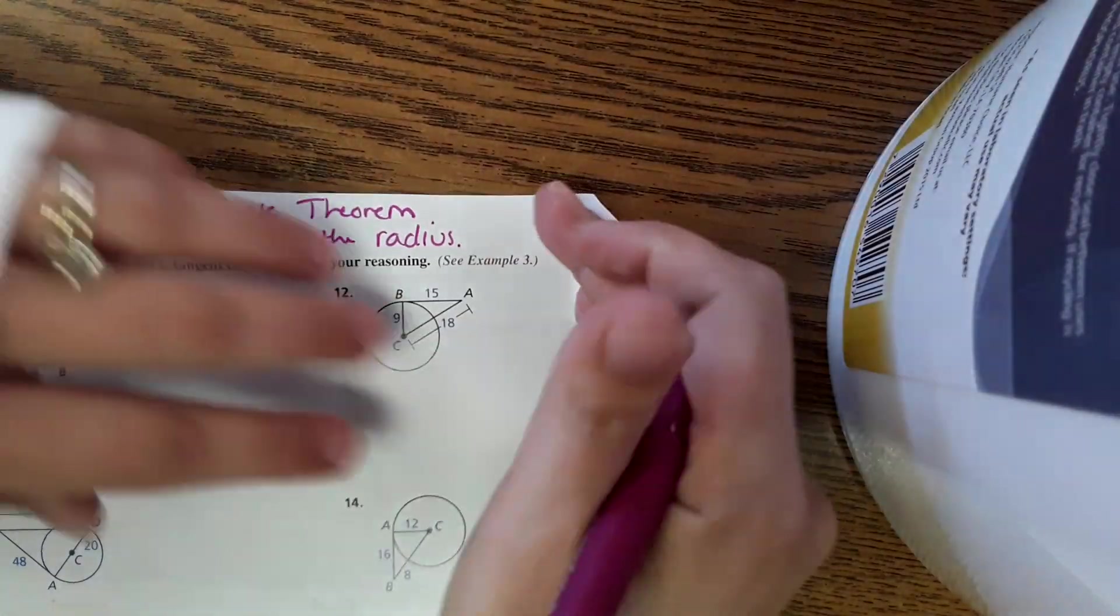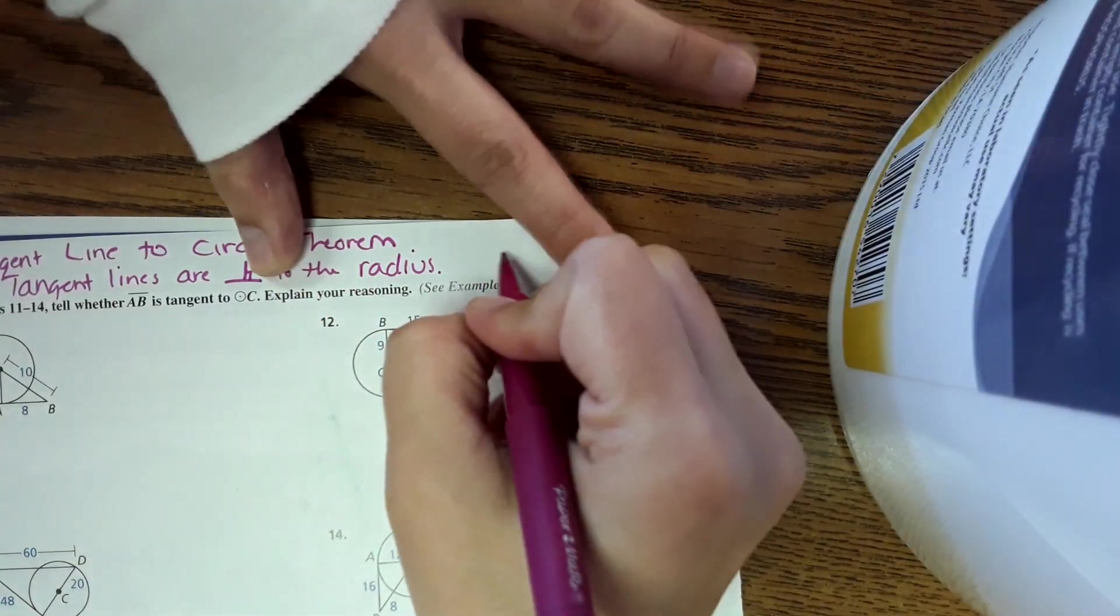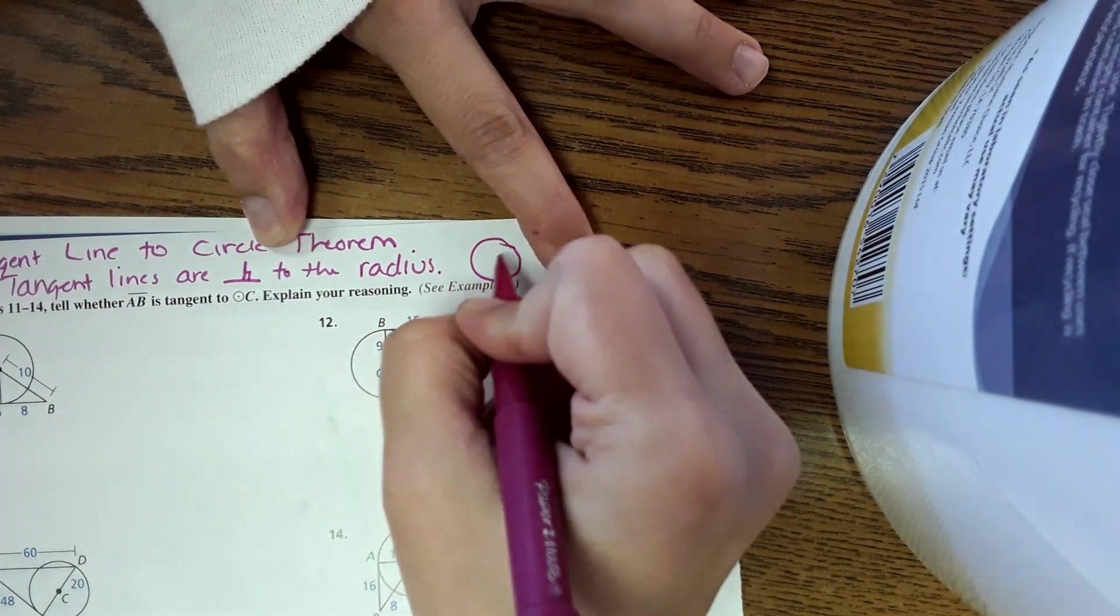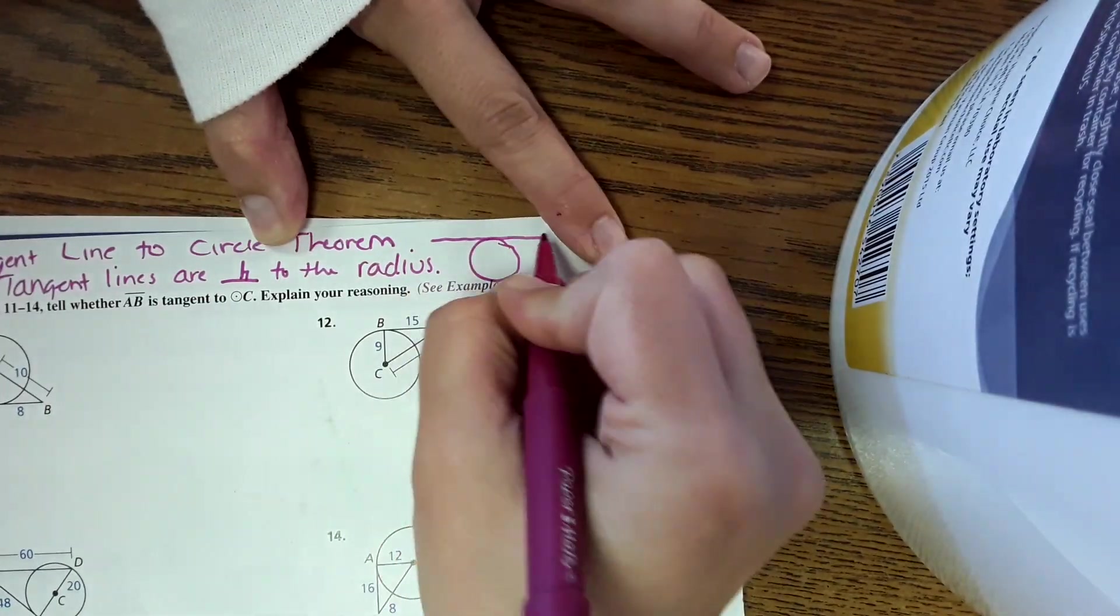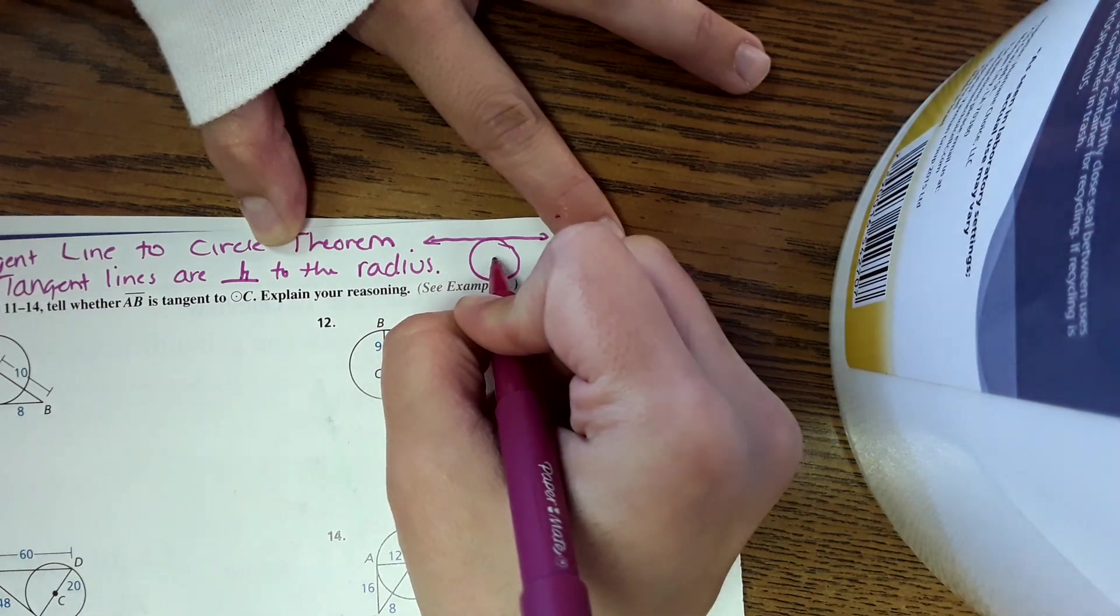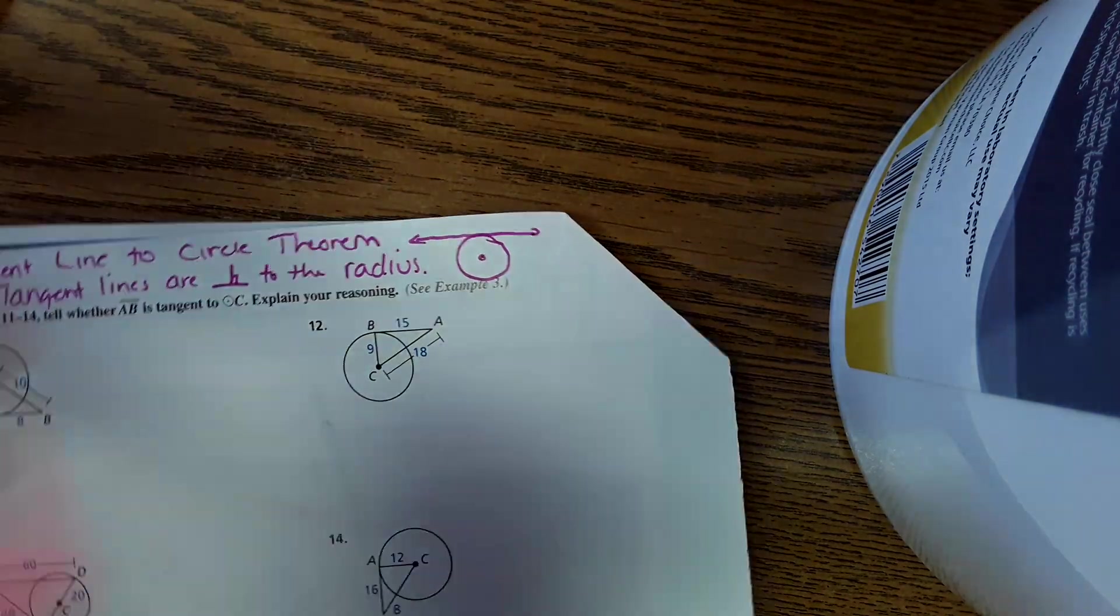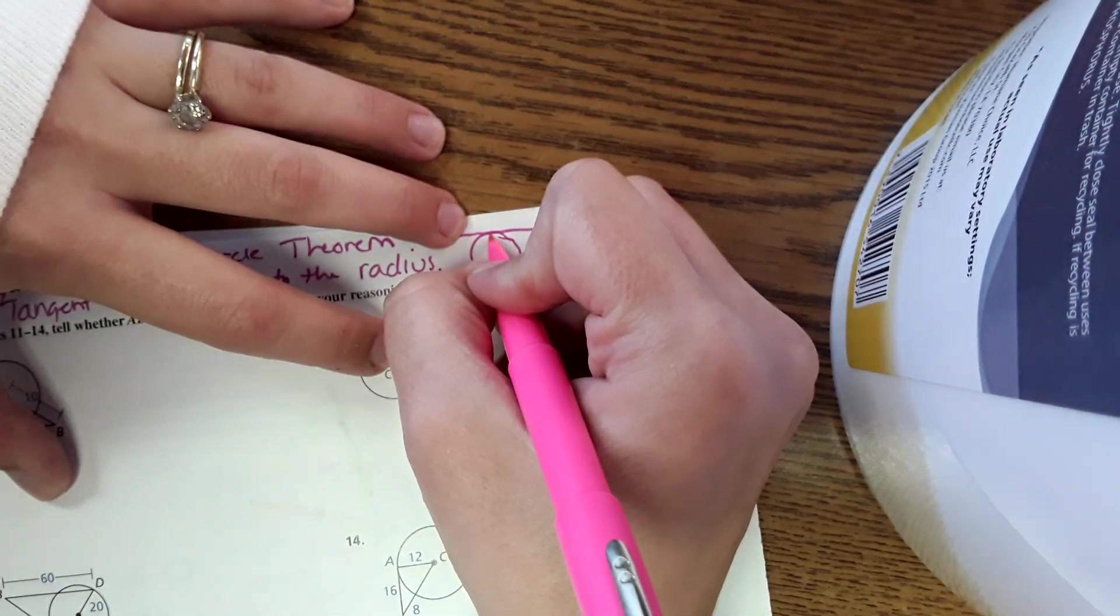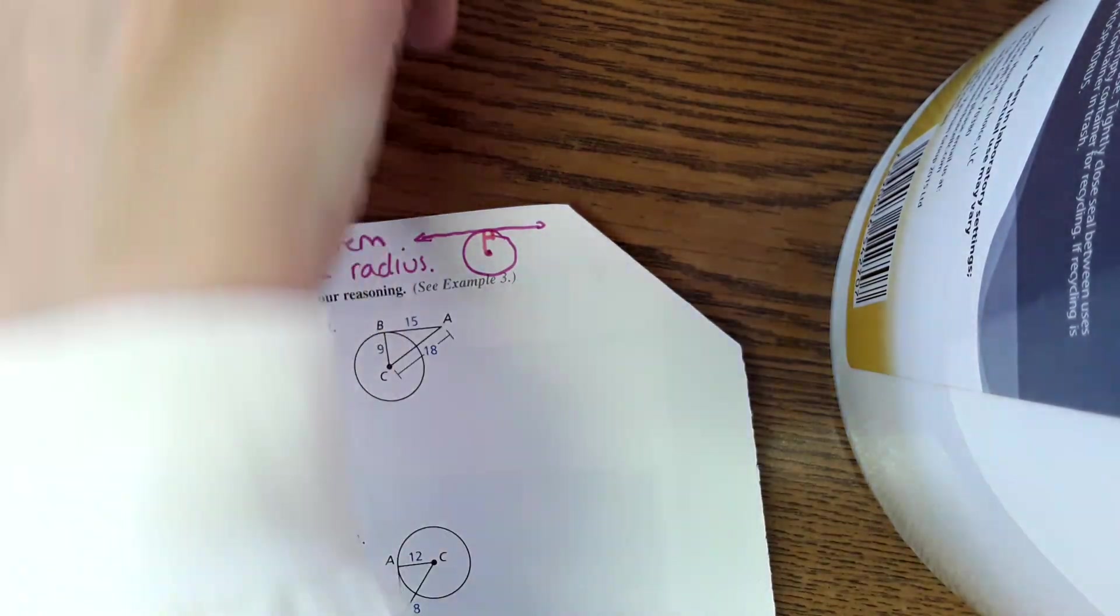So quickly just a little demonstration over here with a picture. Here's our circle. Here is our tangent line right here. If we were to draw a radius right here, you could connect it and it would be perpendicular. So 90 degree angle.